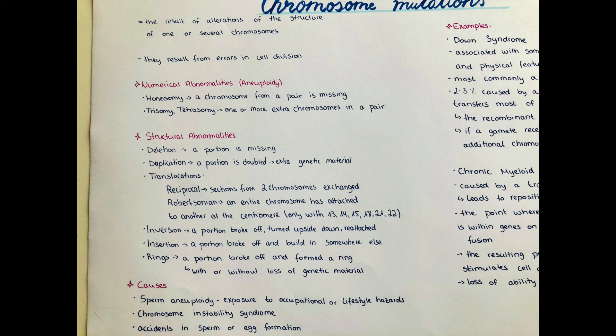Numerical abnormalities are also called aneuploidy. Here we can have either monosomy, where a chromosome from a pair is missing, or trisomy, tetrasomy and so on, where one or more extra chromosomes are present in a pair.